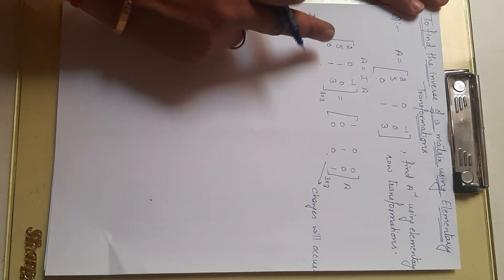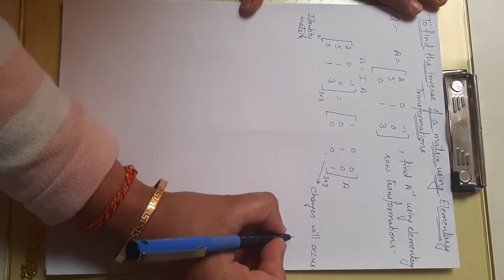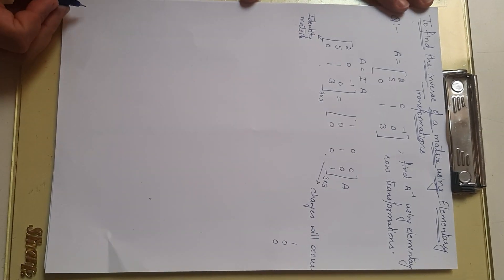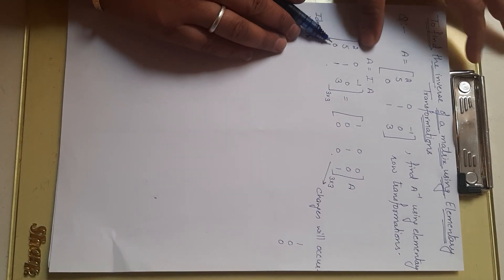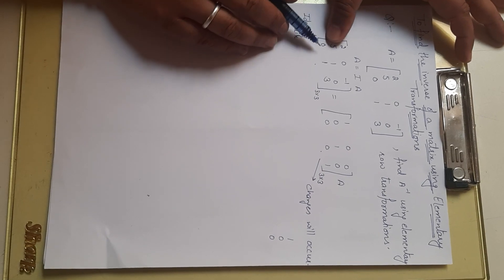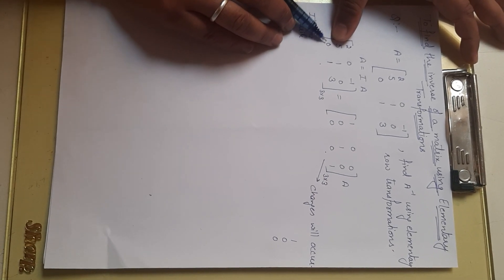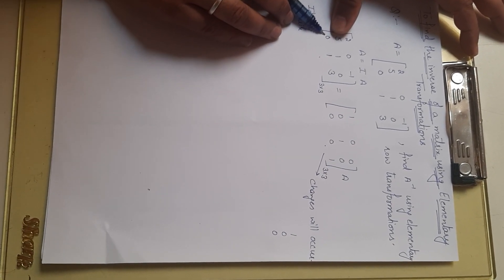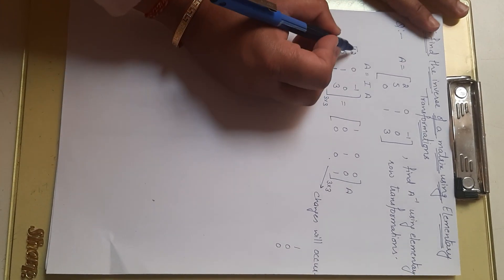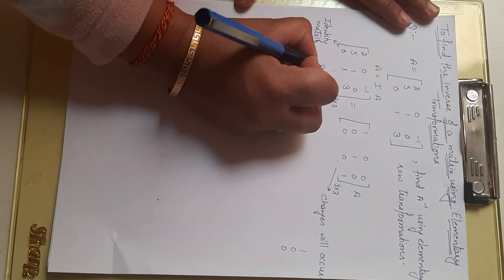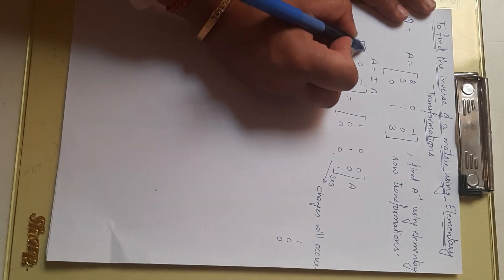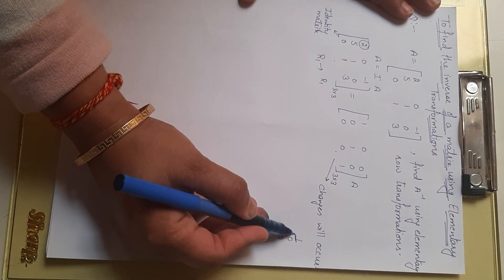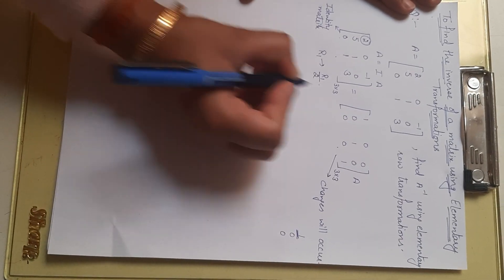The first rule is to change the first column to [1, 0, 0]. That means we need to change the 2 into 1, and the 5 into 0. The zero is already zero so we don't need to change it. First, we operate on R1. Since R1 starts with 2 and we need it to be 1, we divide R1 by 2.